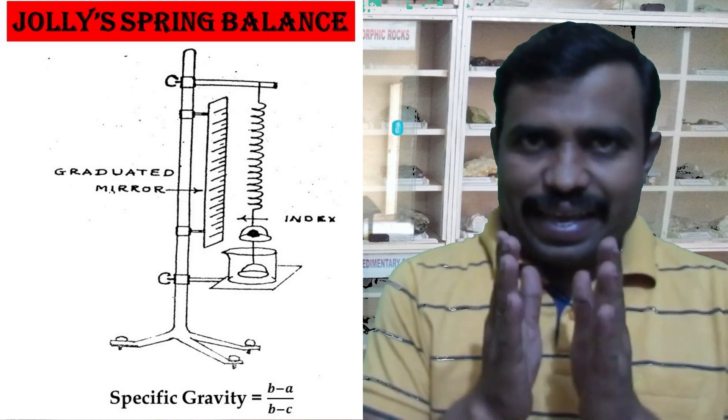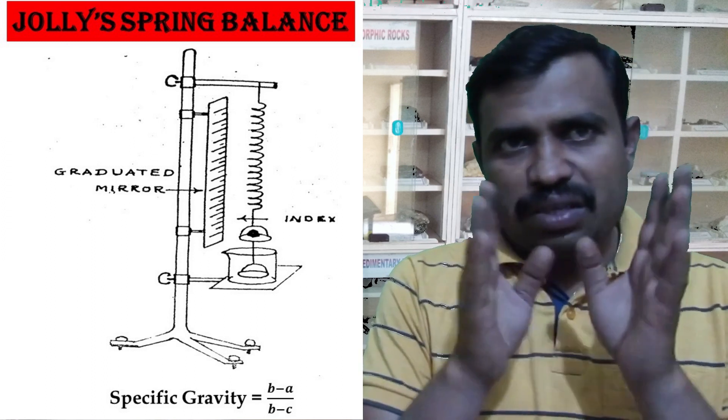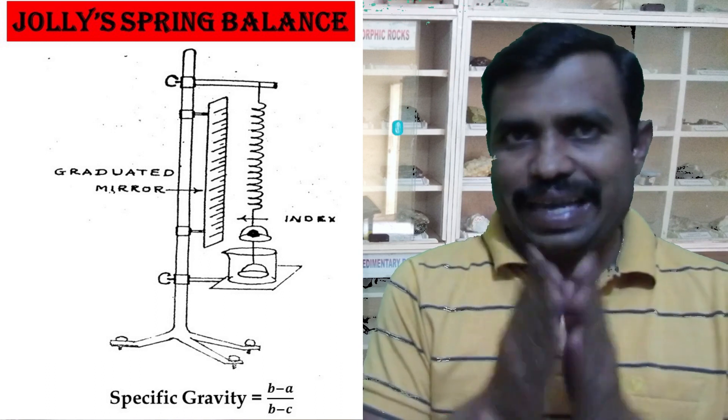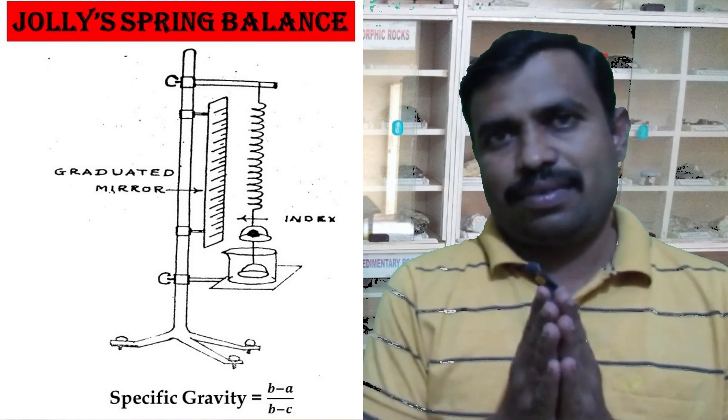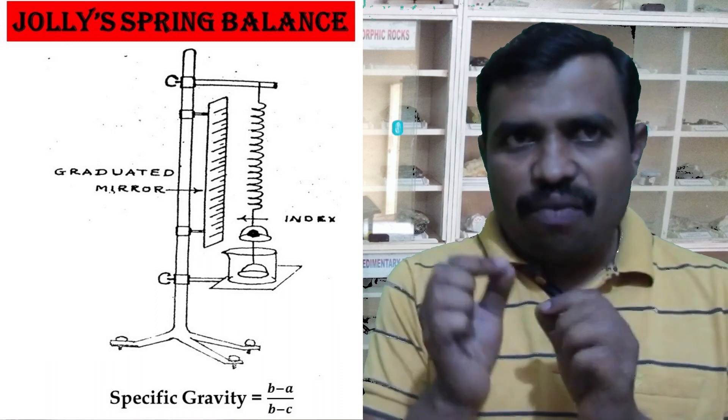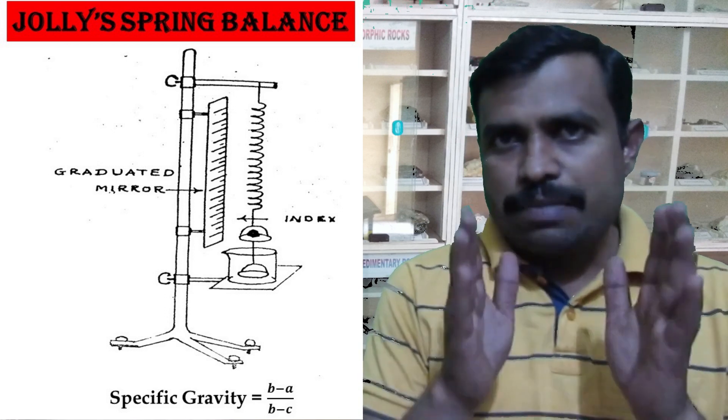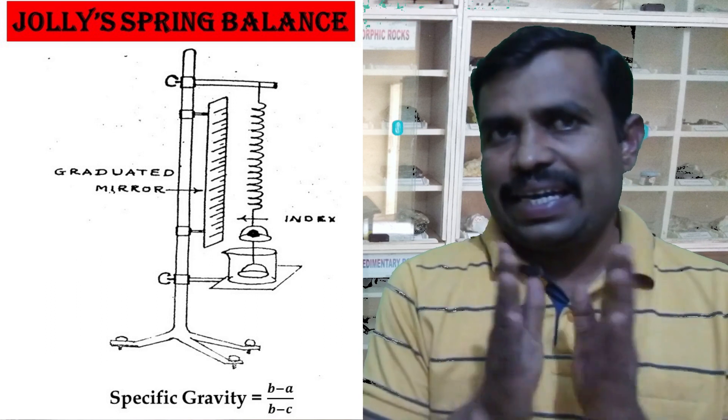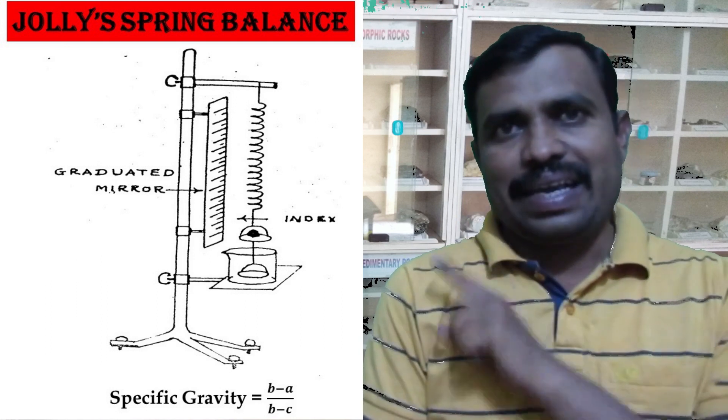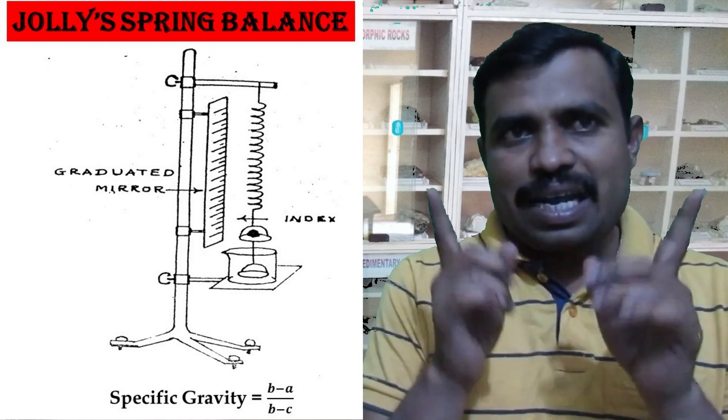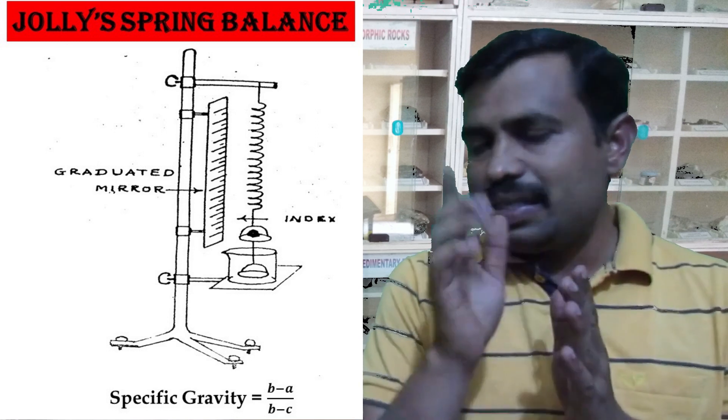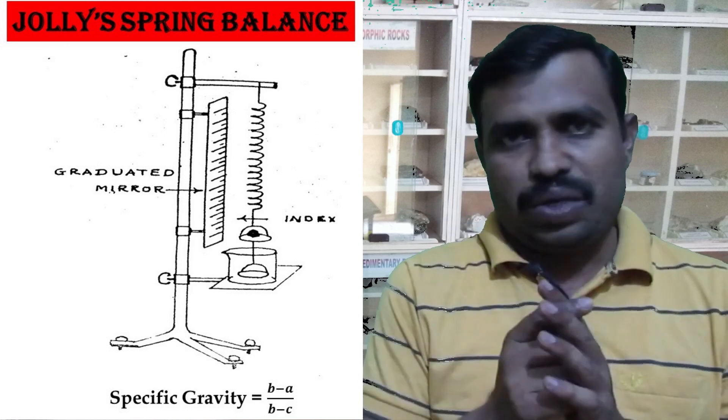The initial reading A of the pointer on the scale is taken without putting anything on the pans. A small piece of mineral whose specific gravity is to be determined is placed on the upper pan and the second reading B is taken. The specimen is then transferred to the lower pan and the third reading C is noted.